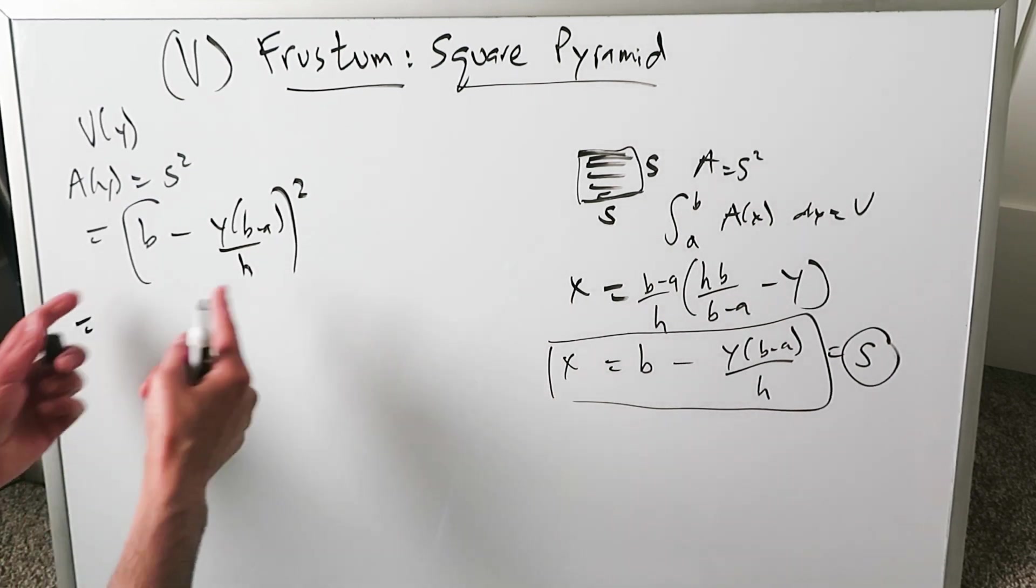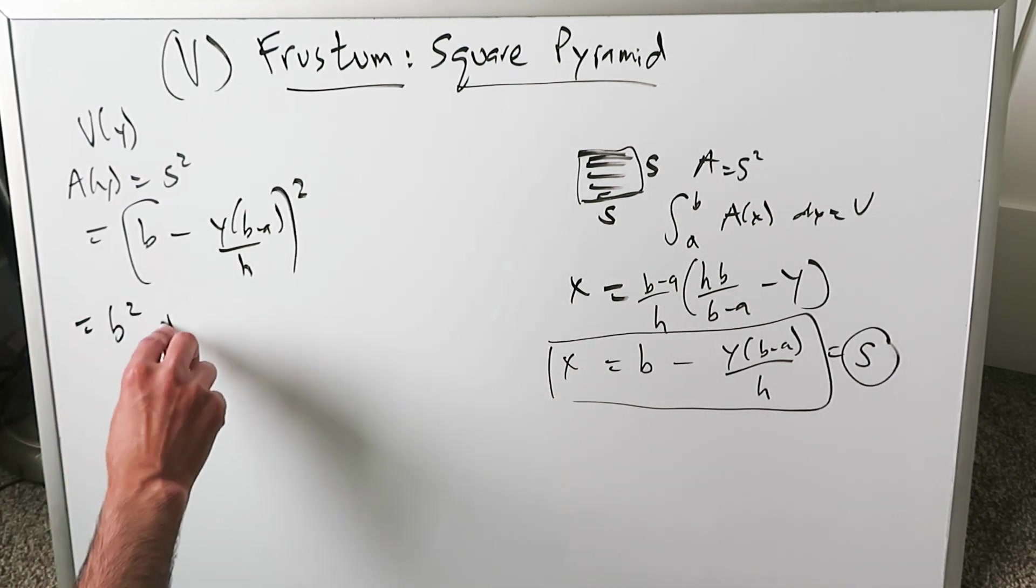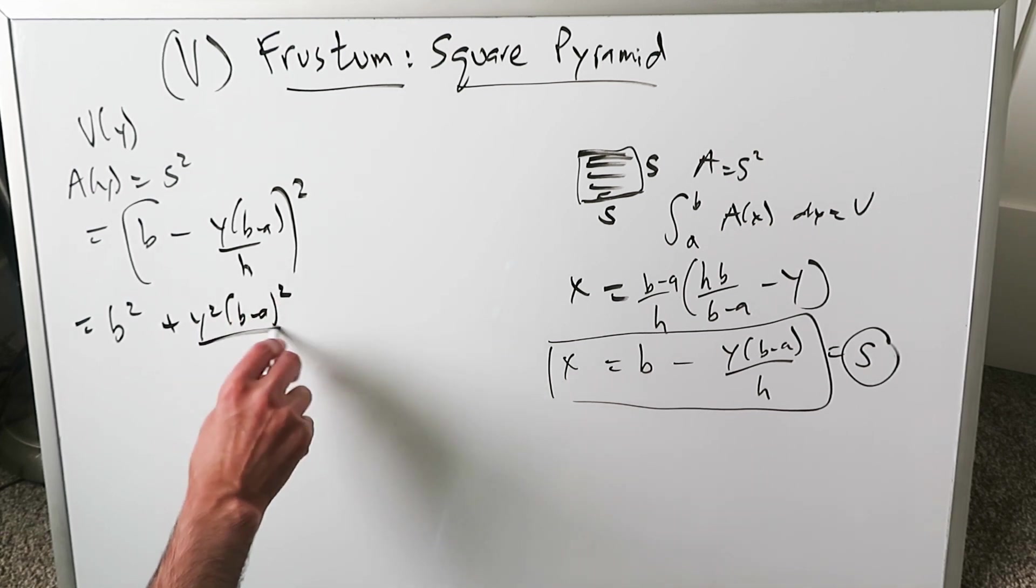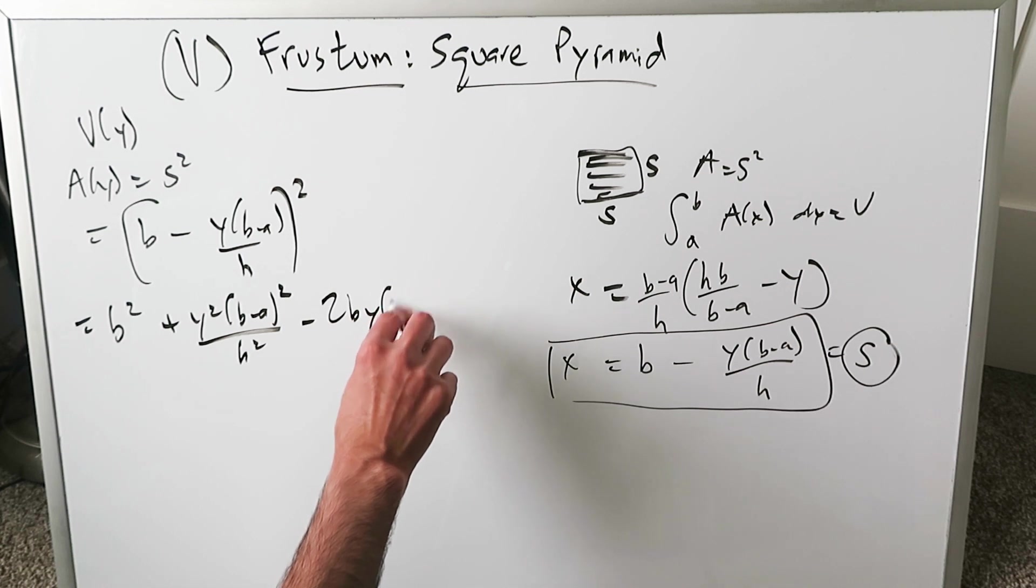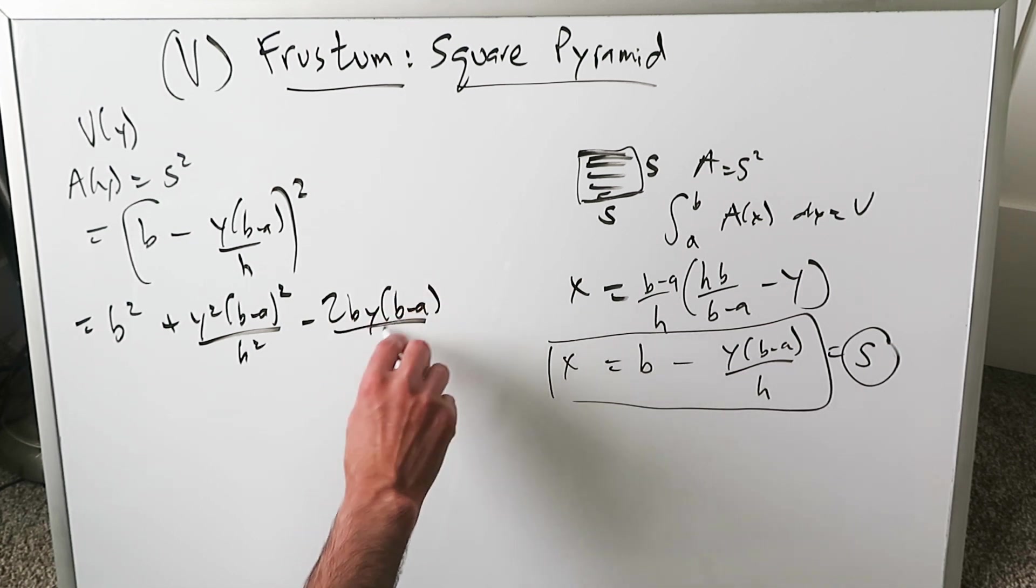We can open this up. It's B minus A whole squared: B squared plus Y squared B minus A whole squared over H squared minus 2BY times B minus A over H.